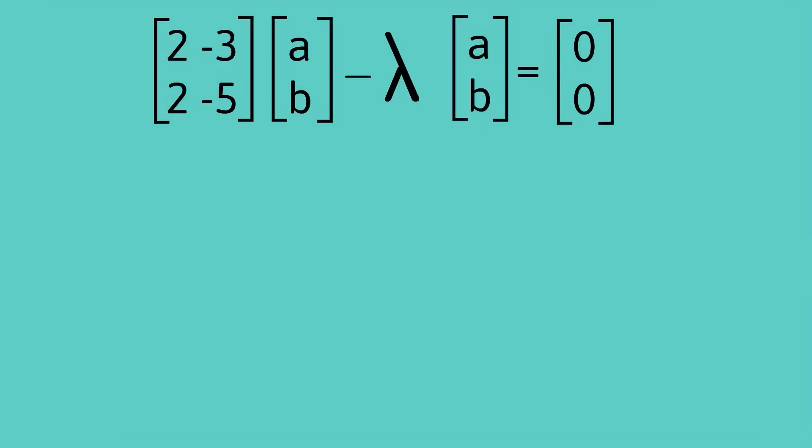So the starting point is that we can subtract lambda times [a,b] from both sides and on the right hand side we'll end up with the vector [0,0].